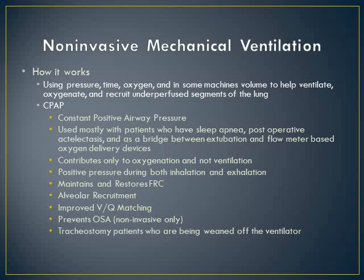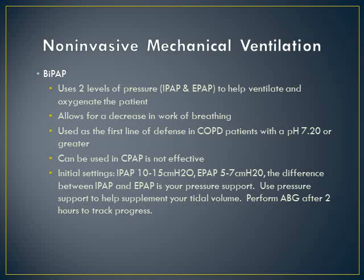We can also use CPAP for trach patients being weaned off the ventilator entirely — usually longer-term trauma patients. BiPAP uses two levels of pressure: IPAP (inspiratory positive airway pressure) and EPAP (expiratory positive airway pressure) to help ventilate and oxygenate the patient. It decreases overall work of breathing, and it's the first line of defense for COPD patients with a pH of 7.2 or greater. If CPAP isn't effective, you can try a low-grade BiPAP.